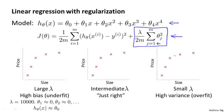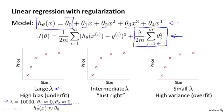Let's consider three cases. The first is the case of a very large value of the regularization parameter lambda, such as if lambda were equal to 10,000 — some huge value. In this case, all of these parameters theta 1, theta 2, theta 3, and so on will be heavily penalized, and we'll end up with most of these parameter values being close to 0. The hypothesis will be roughly h of x approximately equal to theta 0. So we end up with a hypothesis that more or less looks like a flat constant straight line, and this hypothesis has high bias and badly underfits this data set.